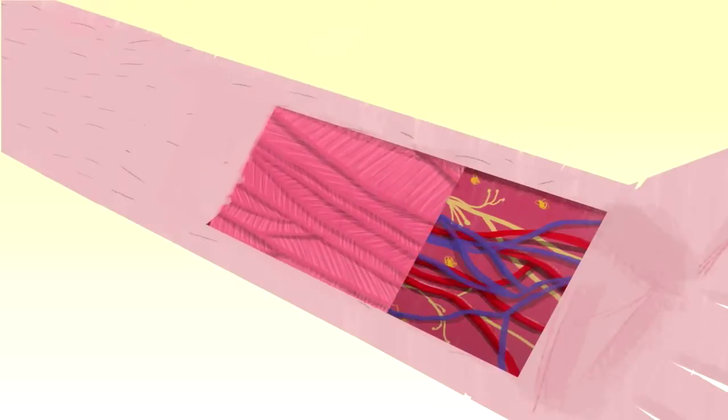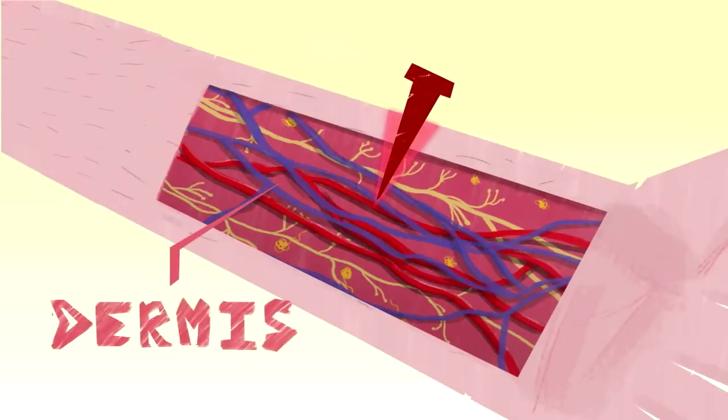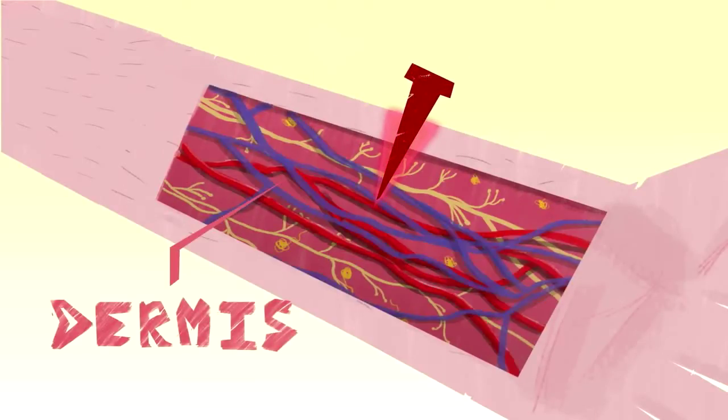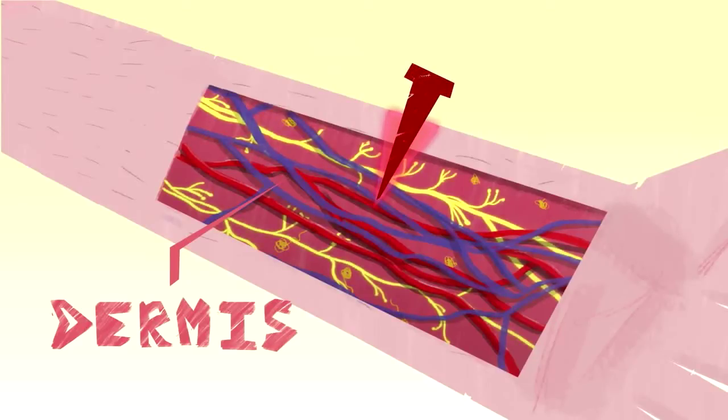Since its outer layer is constantly being shed and renewed, it's pretty easy to look at the structure. But sometimes a wound penetrates into the dermis, which contains blood vessels and various glands and nerve endings that enable the skin's many functions. And when that happens, it triggers the four overlapping stages of the regenerative process.